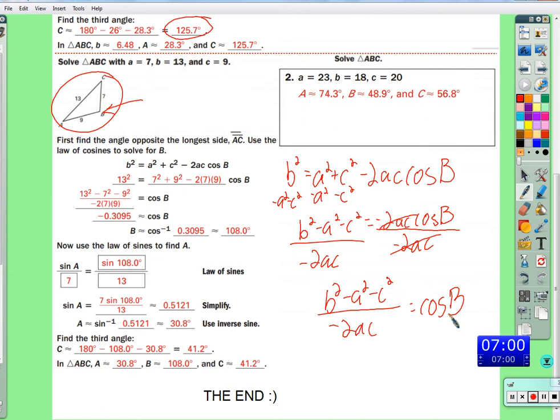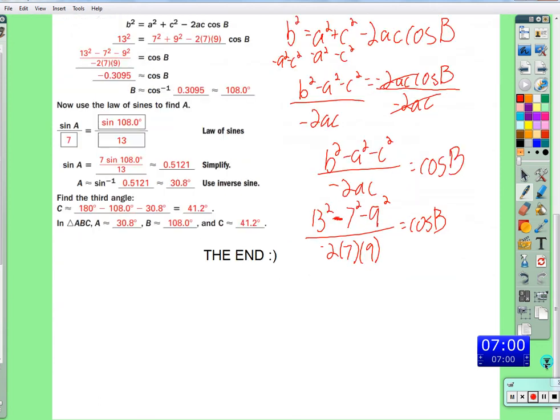B squared minus A squared minus C squared over negative 2AC equals the cosine of B. I'm going to solve for it before you get started. Let me just plug everything in. B, side B is 13. B squared minus A, which is 7 squared, minus C squared. Negative 2 times 7 times 9 cosine of B.